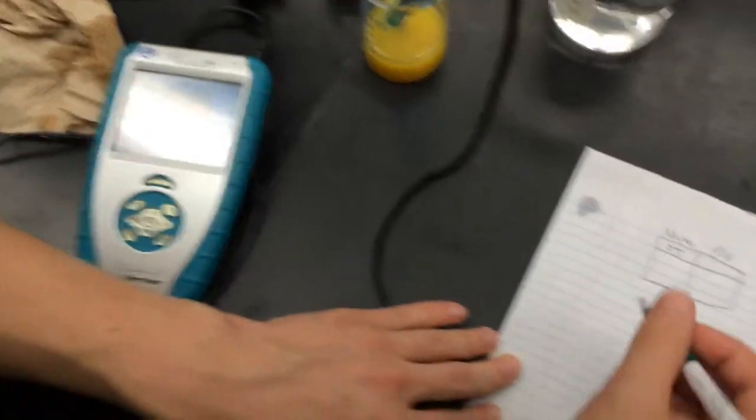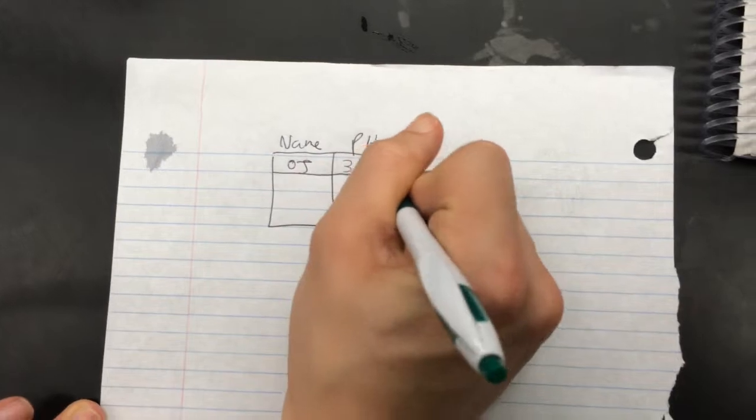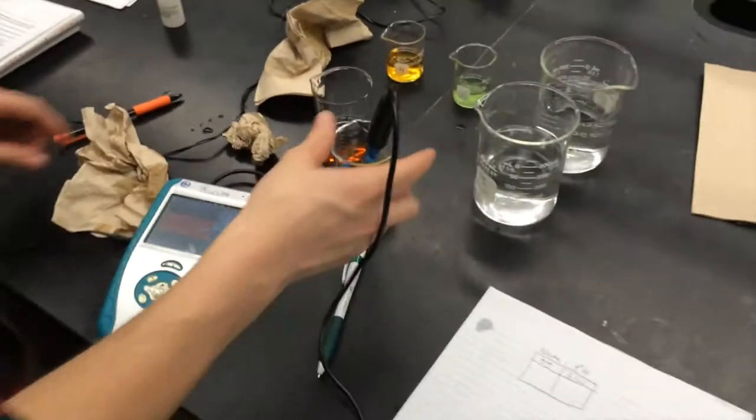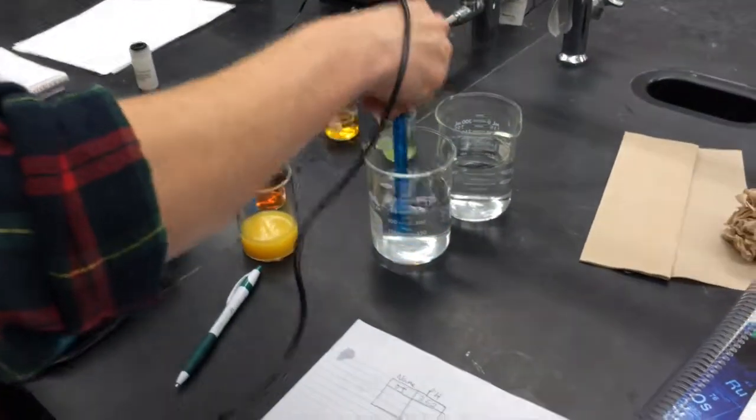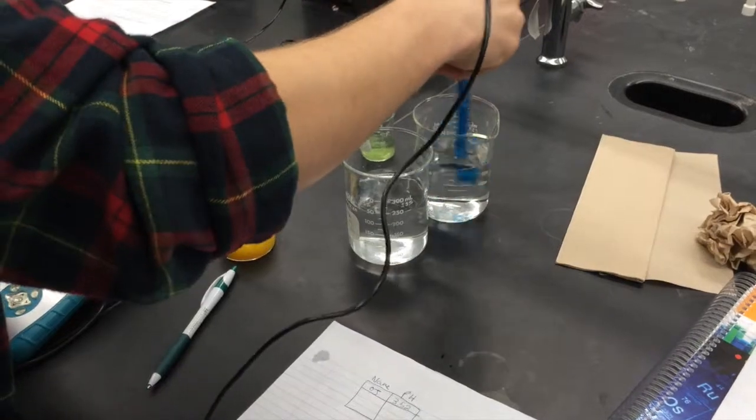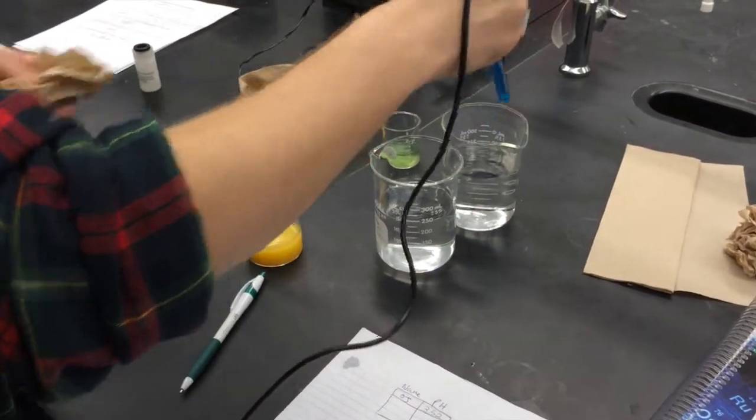Now Stephen can test this solution's pH. He had orange juice, which came out to a pH of 3.52. Stephen is now cleaning the probe for storage.